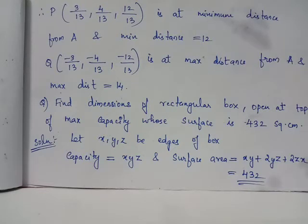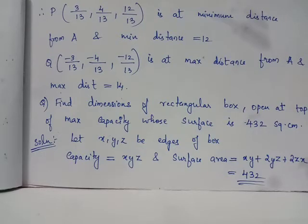We know that a rectangular box is a cuboid whose dimensions are length, breadth and height. We represent the dimensions by x, y and z, and we know that the capacity resembles volume. So we have the volume function given by length into breadth into height which is xyz. And surface area is equal to xy plus 2yz plus 2zx because it is given that the rectangular box is opened at the top.